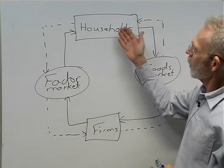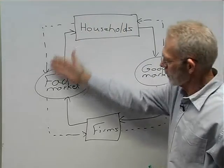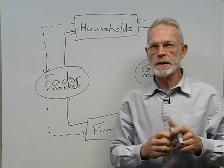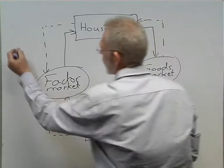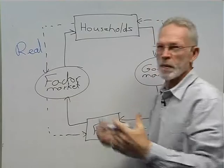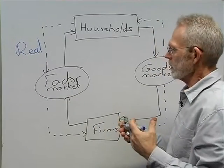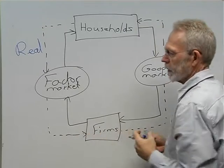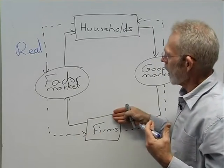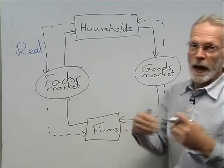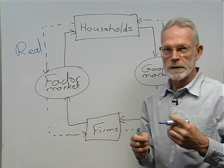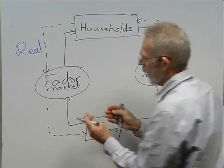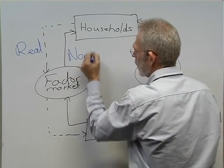We've seen there's a flow of factors of production from households to firms. This flow of factors of production we call a real flow — there's a flow of labour, land and so on. So there's a real flow from households to firms. In return, households receive an income from firms in the form of a salary, wages, profit and so on. And that flow is called a nominal flow.